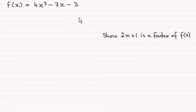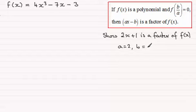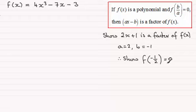Starting with the factor theorem — as a brief reminder, if f(x) is a polynomial and f(b/a) equals zero, then ax minus b is a factor of f(x). When I look at 2x plus 1 and compare it to ax minus b, I can see that a equals 2 and b equals minus 1. So what I have to do is show that f(b/a), in other words f(−1/2), equals zero.